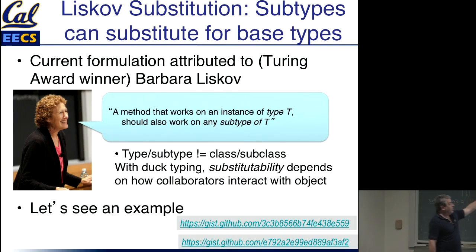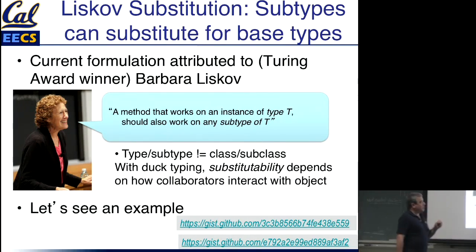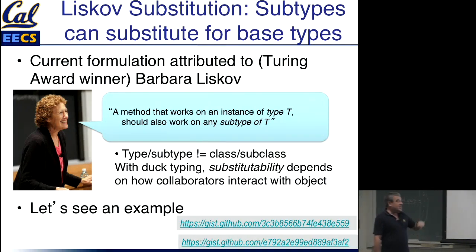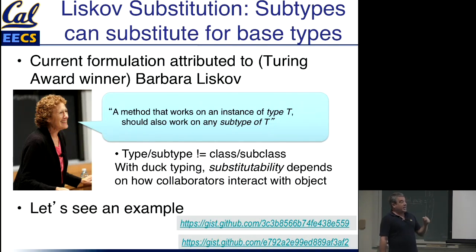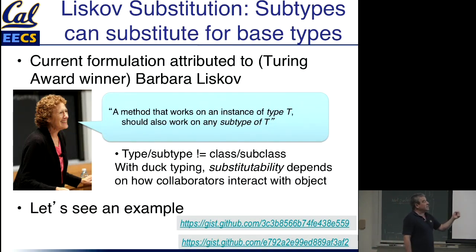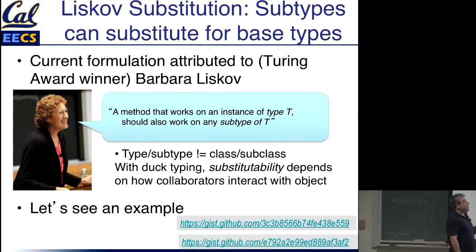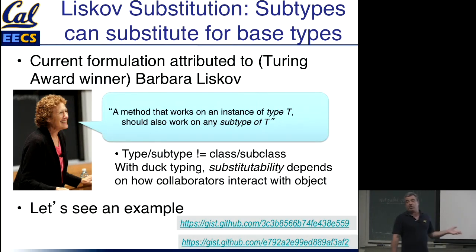Her formulation is: if you have a method or a function that expects an object of type T, then if that object has subclasses or subtypes, it should be legal and correct to pass any subtype of T to the function, and it should work just the same.